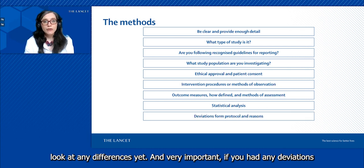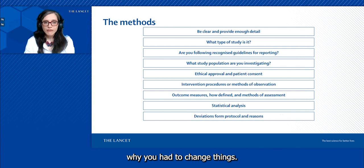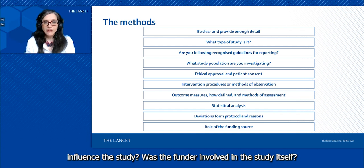Very important: if you had any deviations from the protocol, then list those and give some explanation why you had to change things. And then the role of the funder—did the funder somehow influence the study, was the funder involved in the study itself?